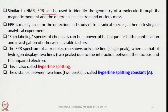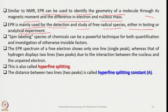Similar to NMR, EPR can be used to identify the geometry of a molecule through its magnetic moment. EPR is mainly used for the detection and study of free radical species, either in testing or analytical experiments. Spin labelling of chemicals can be a powerful technique for both quantification and investigation of otherwise invisible factors that cannot be detected using other methods.